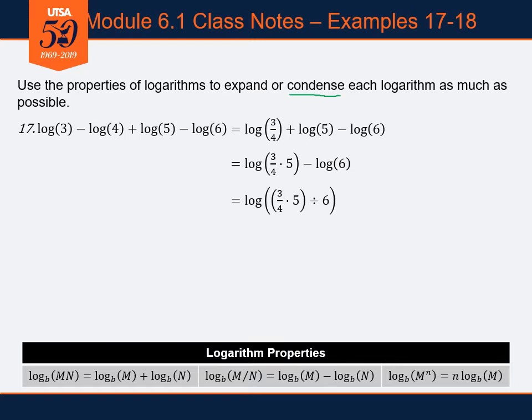Now I've got all my numbers put together into a single logarithm, and I can clean it up. I multiply 3/4 times 5 to get 15/4, then dividing by 6 is the same as multiplying by 1/6. Multiplying those two fractions gives log of 15/24, and we might as well reduce that fraction — 15/24 reduces to 5/8. So log of 5/8 is what the original combination of logarithms simplifies down to.